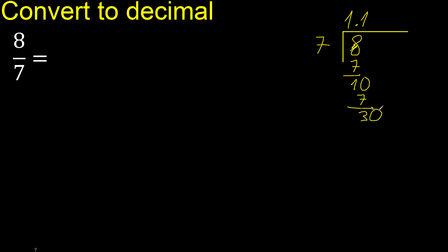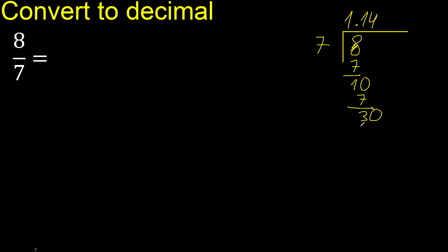0 point — point is here. 30: 7 multiplied by 4 is 28. Subtract, complete. 20: 7 multiplied by 2 is 14. Subtract, complete.